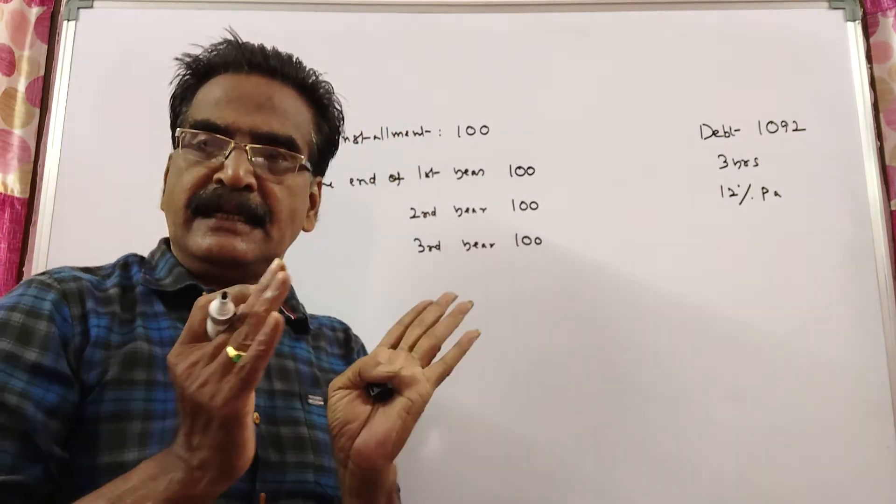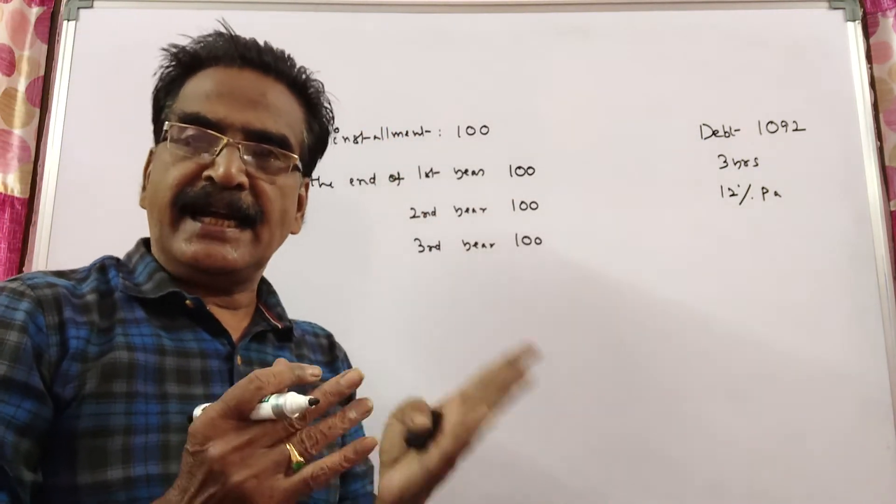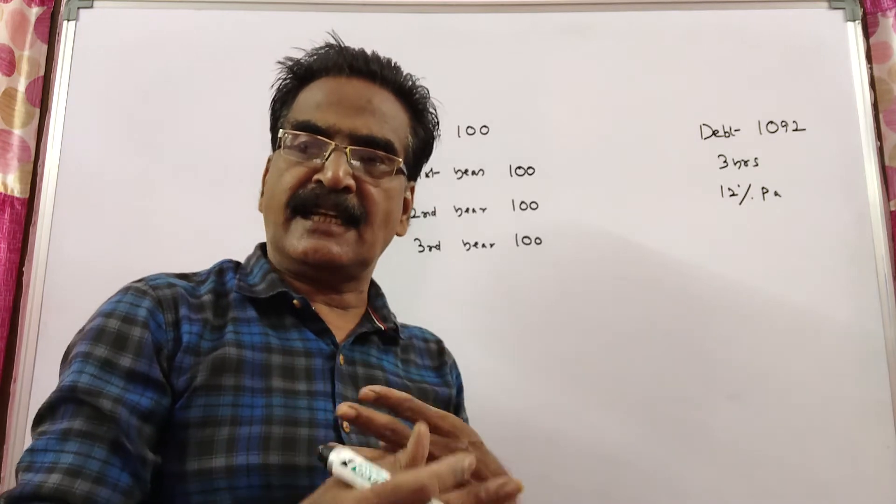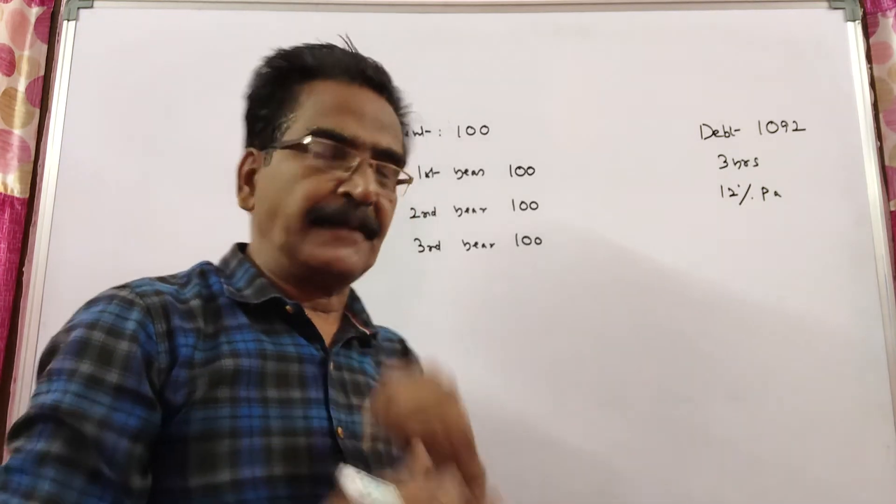Friends, say each installment is 100. We pay 100 at the end of the 1st year, 100 at the end of the 2nd year, and 100 at the end of the 3rd year.